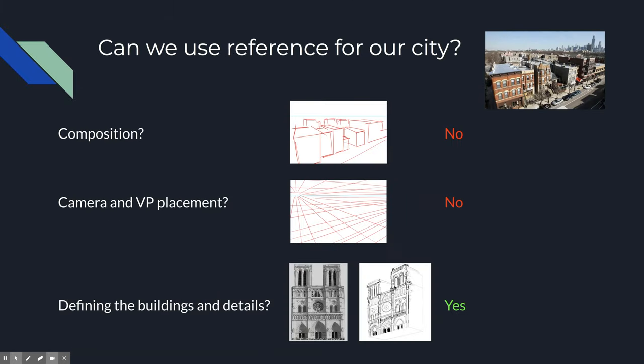Photo reference: can we use reference for our city drawing? Artists can't not use reference — I use it all the time. But as a student, your standard is higher because you're demonstrating your learning. What you could do to earn an F would be to find a photograph of a city and copy the camera, perspective grid, and shapes out of it — that's plagiarism, just like copying your math homework.